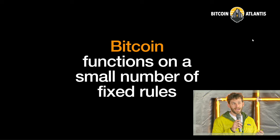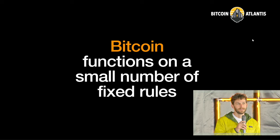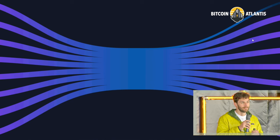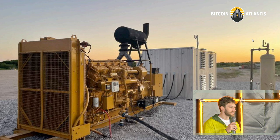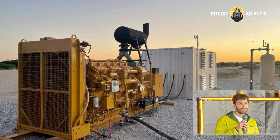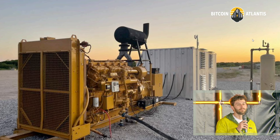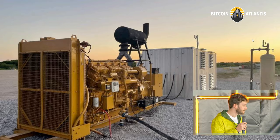Bitcoin also functions on a small number of very fixed rules — we have 21 million, a transaction is either valid or it's not valid. And because of that, and because of an open network around it, you end up with lots of emergent behaviors that weren't necessarily predictable by the protocol to start with. Things like coin joins or gas flare mining. We have sort of accidentally discovered an amazing way to help fix climate change using Bitcoin, and I don't think that would have been obvious at the start.